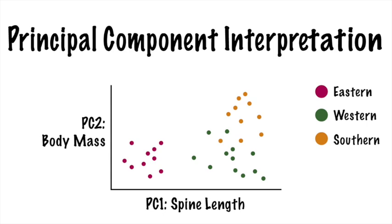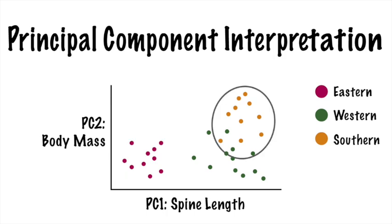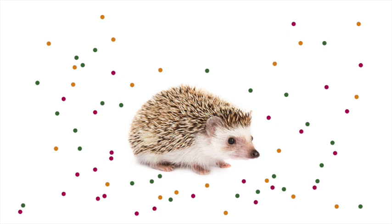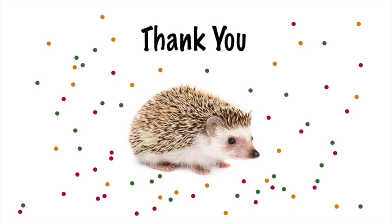Secondly, you should look for trends, outliers, extremes, and groupings in your data and compare this to your understanding of your principal components. For example, if we take our interpretation of the principal components to be correct, we could see that eastern hedgehogs vary greatly from western and southern ones in spine length, although southern ones are set apart in weight, a less important component. PCA is really case-by-case and requires some intuition about your data, but can be a very useful tool. I hope you give it a shot. Thanks for listening!